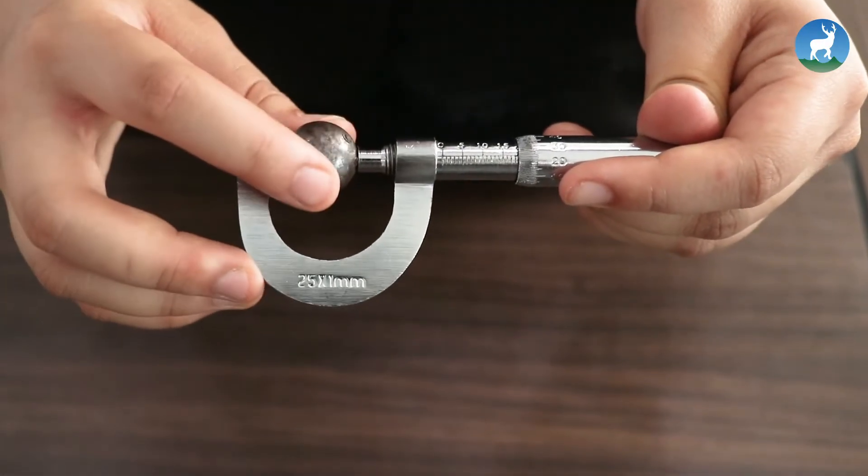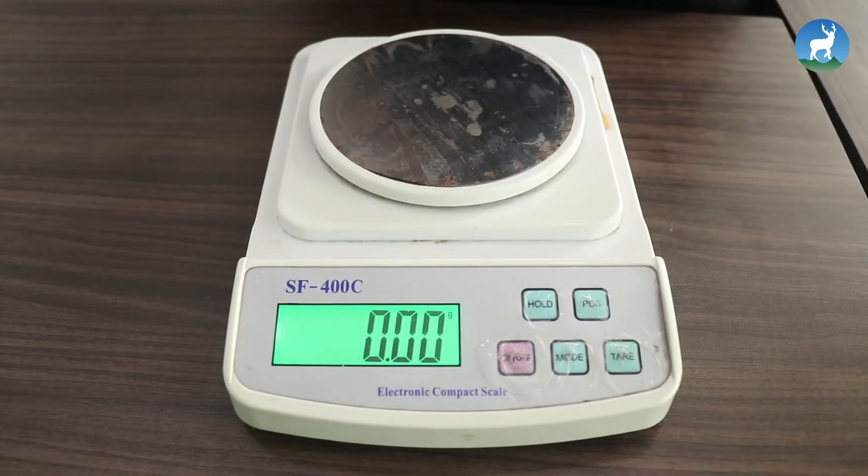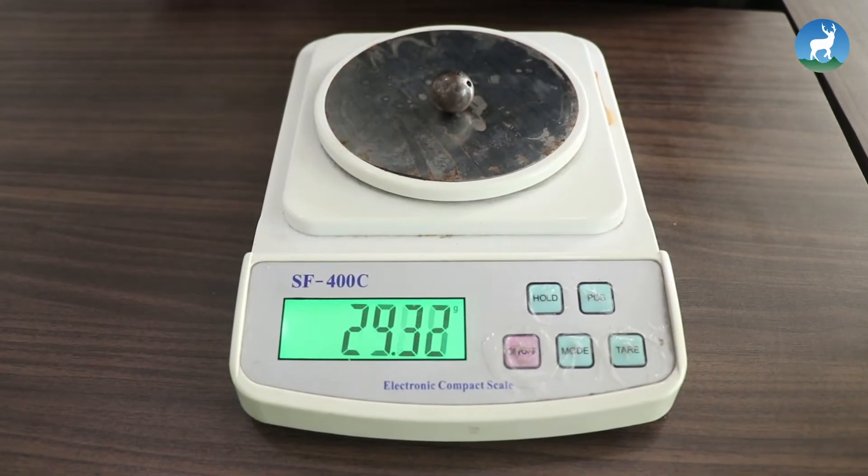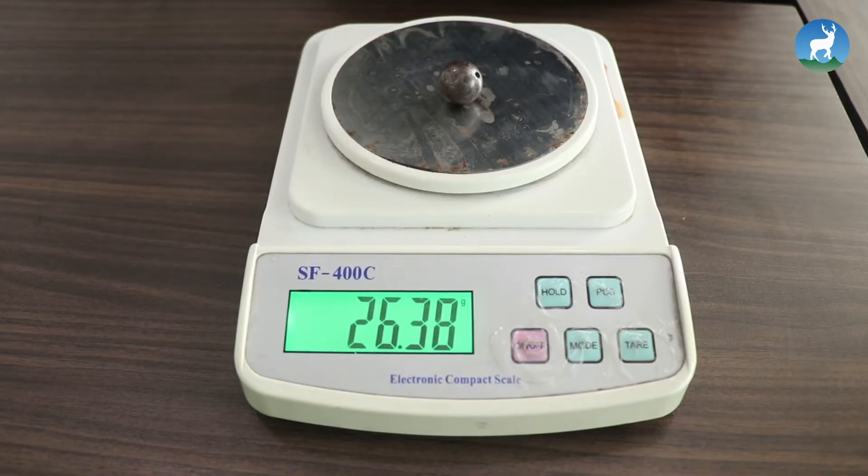Then, the mean of four observations should be calculated. The mass of the sphere is measured in digital balance and it comes out to be 26.38 grams.